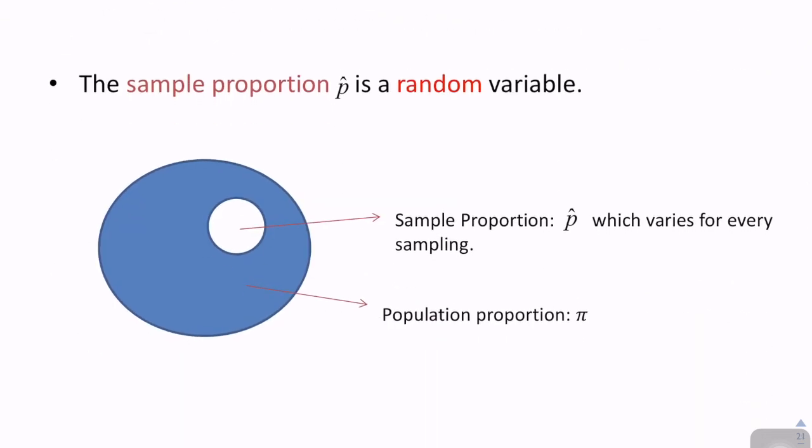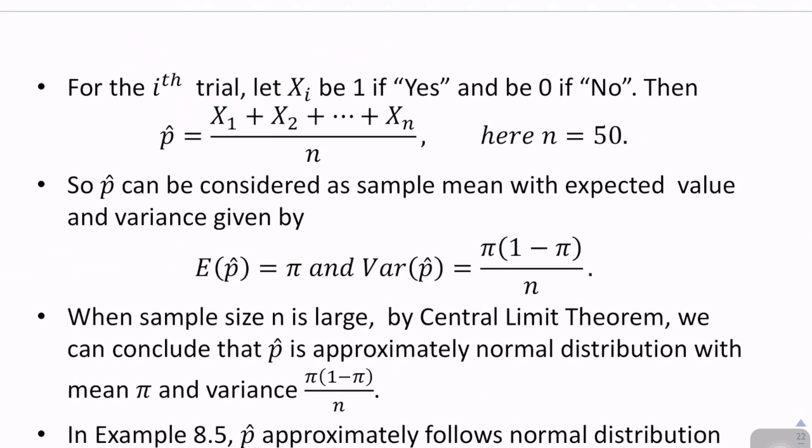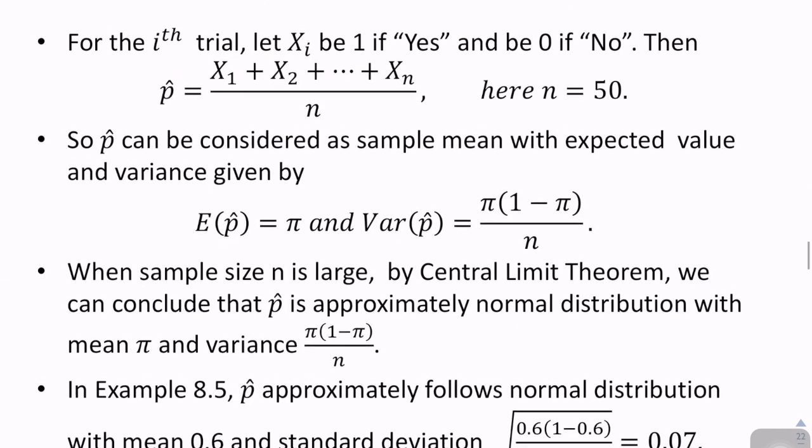That's the big picture I showed you before. So the big blue circle is the population, and this white small circle refers to the sample proportion. So p hat varies for each sampling, which means p hat should be random.